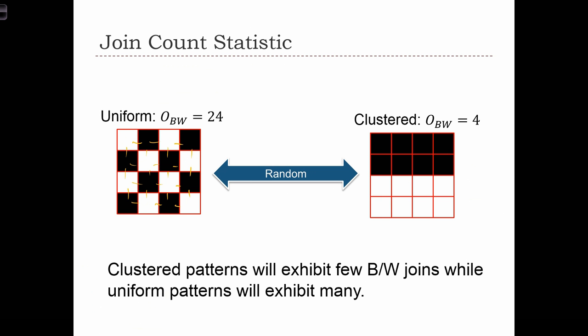On the right-hand side we have an extreme clustered map — positive autocorrelation. All the high values are on one side of the map and all the low values are on the other side. In this case we only have four black-white joins. So we see that in clustered cases the observed number of black-white joins is going to be small, and in uniform cases the observed number of black-white joins is going to be large.